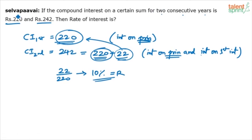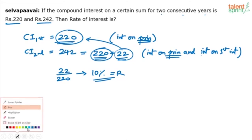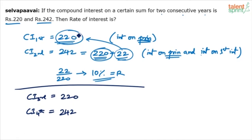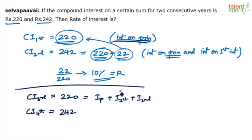Let's say if it is the third year and fourth year — taking a different case. In that case, I think the data would be insufficient. Because if CI for the third year is 220, I do not know how much of that 220 is interest on principal. In the first year it is very clear — you only get interest on the principal. But from the second year onwards, interest on interest comes into the picture. So if it is the third year, out of the total 220, there is some interest on principal, some interest on first year's interest, and some interest on second year's interest. How do I know what those values are? Not known to us.